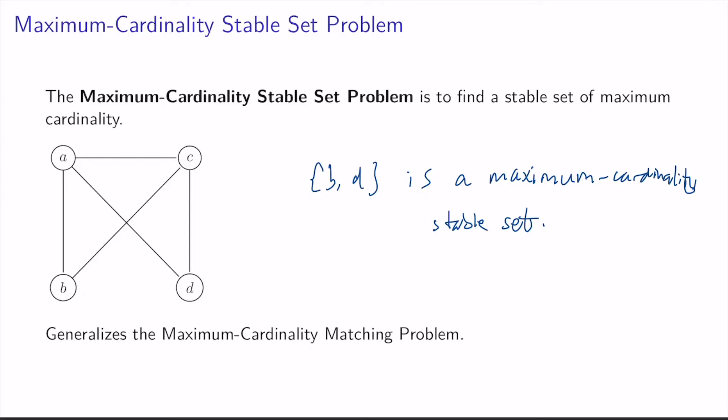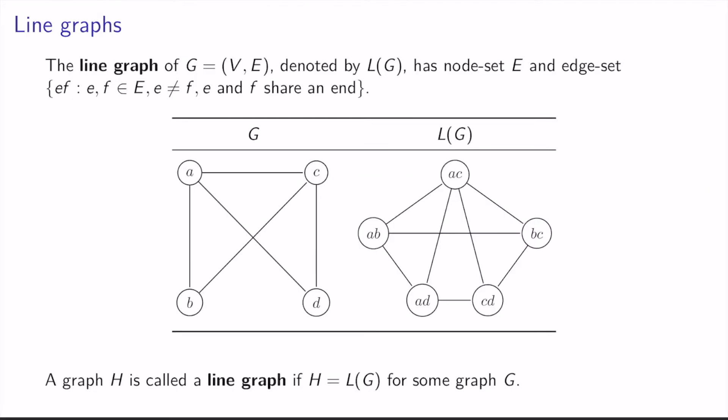It turns out that the maximum cardinality stable set problem generalizes the maximum cardinality matching problem. To this end, we need to define a line graph. The line graph of a graph G with node set V and edge set E, denoted L(G), has node set E and edge set given by {e, f} where e and f are edges in G, e not equal to f, and e and f share an endpoint.